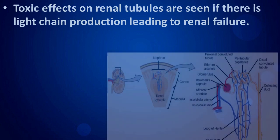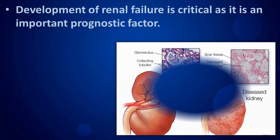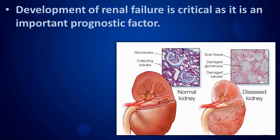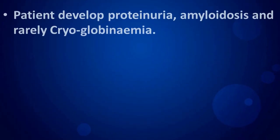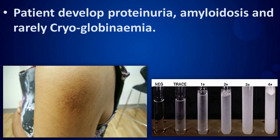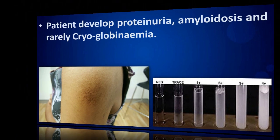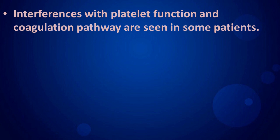Paraprotein leads to increased plasma volume and hyperviscosity. Toxic effects on renal tubules are seen if there is light chain production, leading to renal failure. Development of renal failure is critical as it is an important prognostic factor. Patients develop proteinuria, amyloidosis, and rarely cryoglobulinaemia. Interference with platelet function and coagulation pathways is seen in some patients.